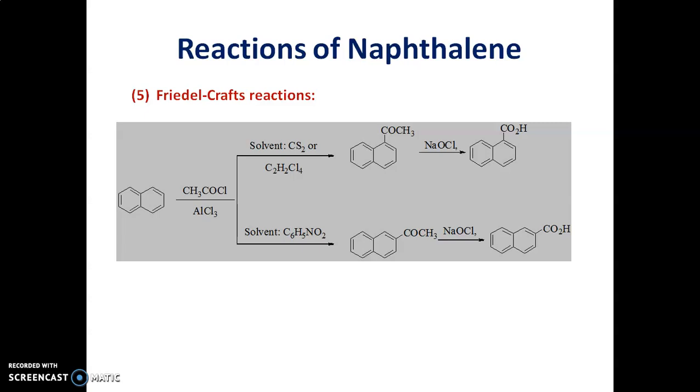Naphthalene on Friedel-Crafts reaction under mild reaction conditions gives 1-substituted product or 2-substituted product. Depending upon the reaction condition, when we are using carbon disulfide as a solvent, then we are getting 1-acetylnaphthalene. And when we are using nitrobenzene as the solvent, then we get 2-acetylnaphthalene as the product.